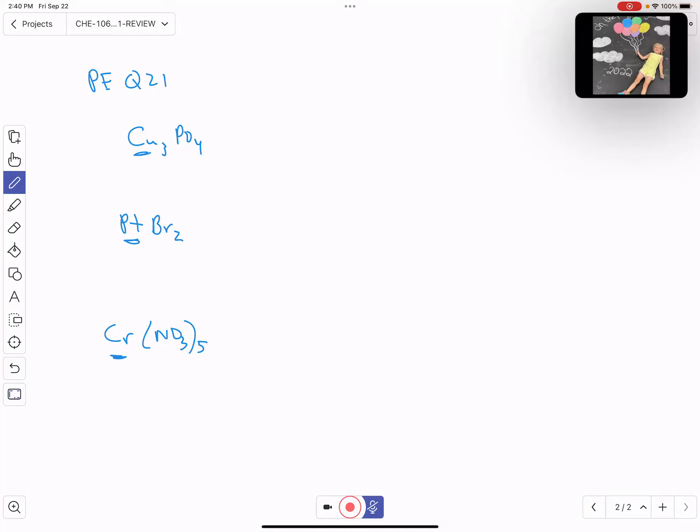Phosphate is a polyatomic. We know that phosphate is PO4 three minus. If phosphate is PO4 three minus and I have three coppers to balance that out, this must make copper (I) phosphate.